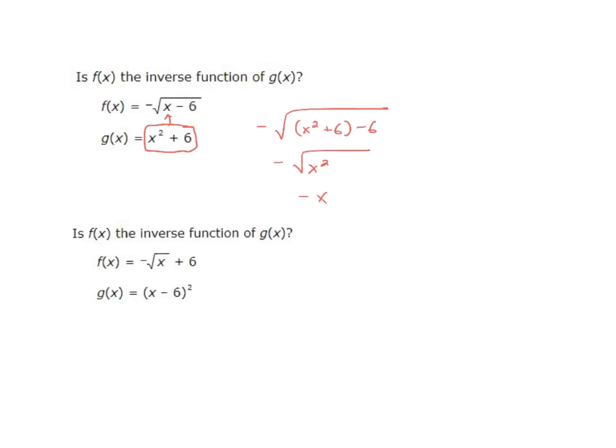and then you end up with a negative x. Now we did get an end result of x, yet it was left negative, so this is not an inverse. If this had just been a plus, then that would be an example of something that is an inverse.